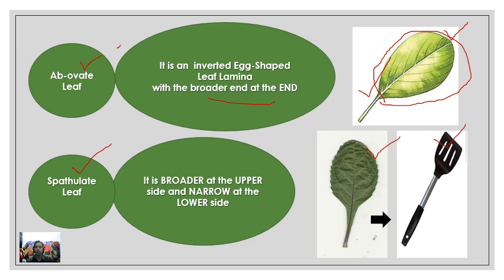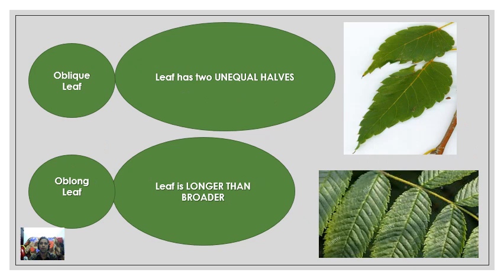Next is the spatulate leaf, which is spoon-shaped. You can see in a kitchen spatula — it is broader at the upper end and narrow at the base, just like a spoon. Such a leaf is called a spatulate leaf.